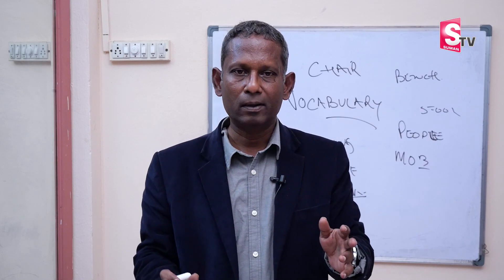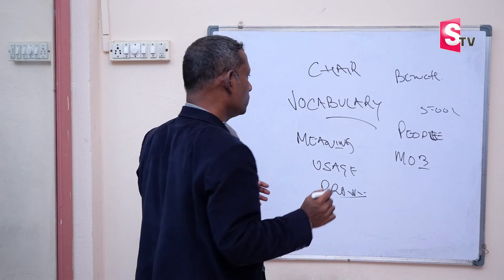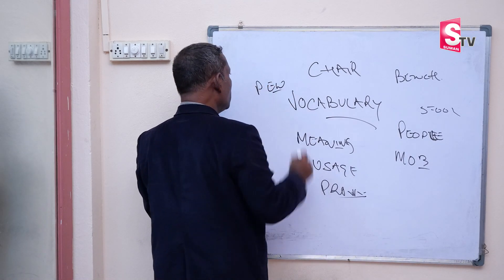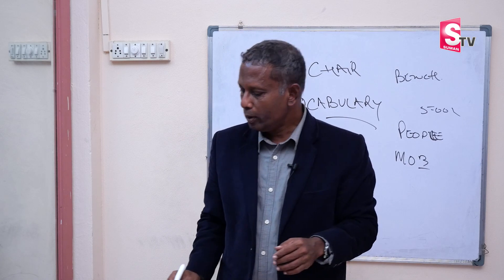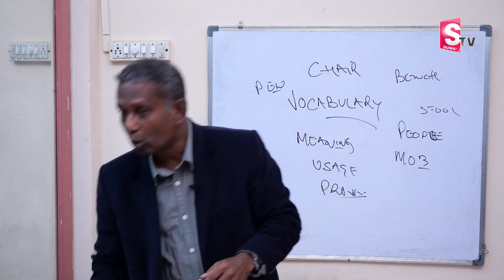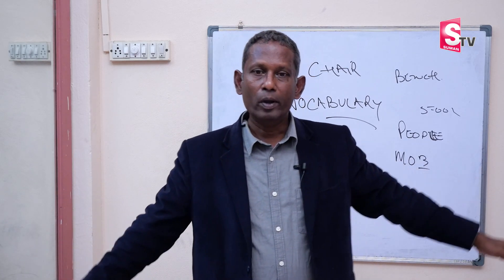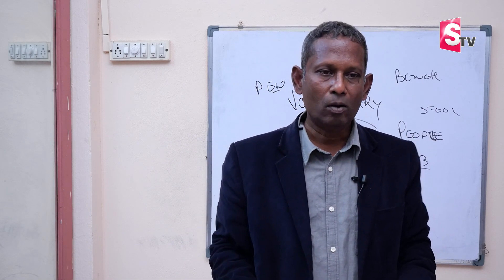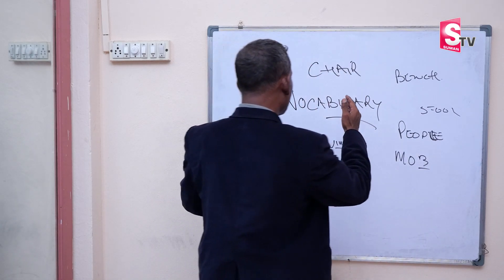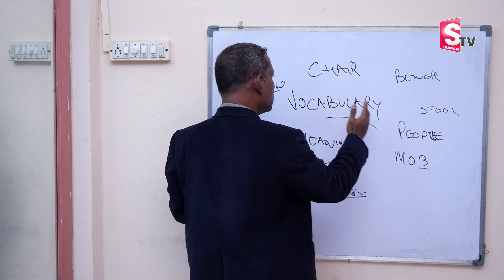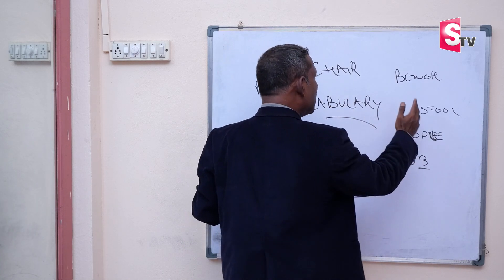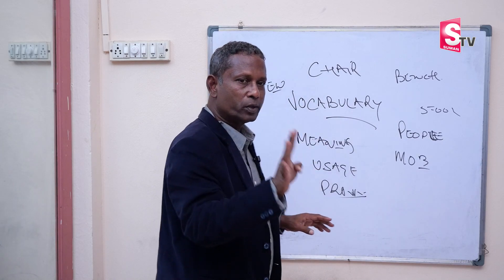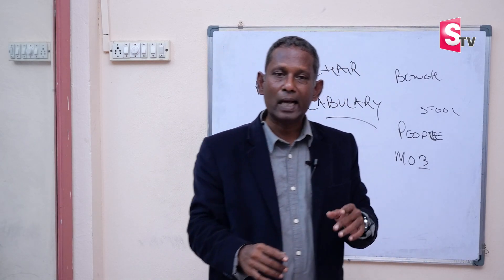The next word is 'pew.' A pew is a long chair where around 10 to 20 people can sit together. So we have four seating words: chair, stool, bench, and pew. You should know the usage of each of these words.